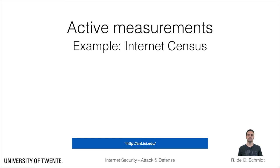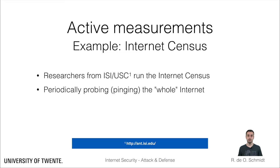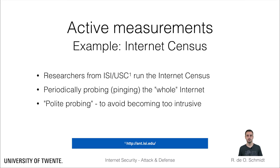One example of a study using active measurements is the Internet Census from researchers at the Information Science Institute at the University of Southern California. They have been periodically probing the entire IPv4 space using ICMP requests. It is important to highlight that over the years they have adjusted their probing strategy and tools so that they can perform such large-scale measurements without becoming too intrusive.